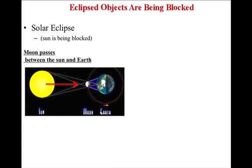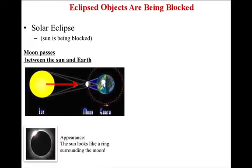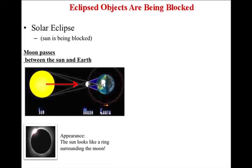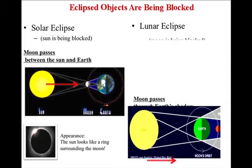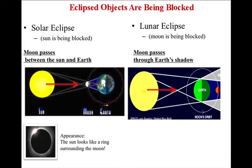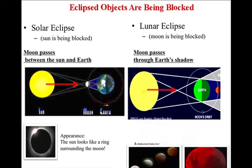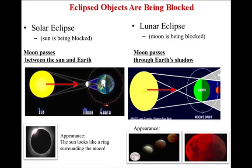Eclipsed objects are the objects being blocked. In a solar eclipse, the sun is being blocked by the moon. The moon passes between the sun and Earth. The red arrow points to where sunlight shines on the far side of the moon, so that the moon casts a shadow on the Earth. In a lunar eclipse, the moon is being blocked by the Earth. The moon passes through the Earth's shadow. The red arrow points to where the sunlight shines on one side of the Earth, so a shadow is cast on the close side of the moon.